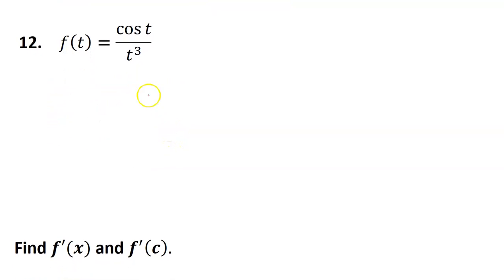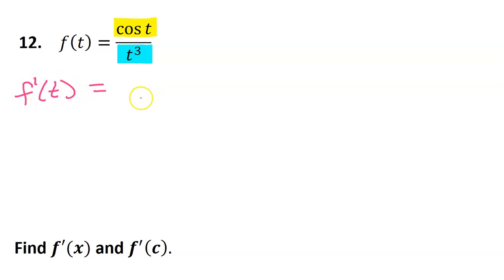Number 12 — we will once again use the quotient rule. We can look at function f as the quotient of the high function cosine t divided by the low function t cubed. So if I want to find the derivative f prime at t, I can use the quotient rule: low d high less high d low, draw the line and down below, the bottom squared will go.